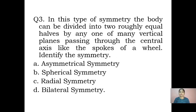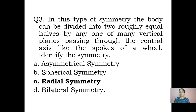Third question: identify the type of symmetry where the body can be divided into two roughly equal halves by any one of many vertical planes passing through the central axis, like the spokes of a wheel. Whenever you come across the phrase 'spokes of a wheel,' think of a circle — therefore the answer is radial symmetry. In radial symmetry, it is like a circle and all planes pass through the center of the organism. Examples include hydra, starfish, and sea anemone.